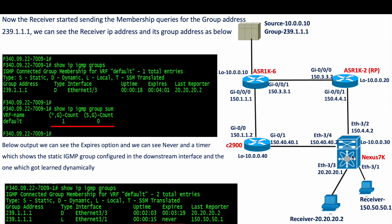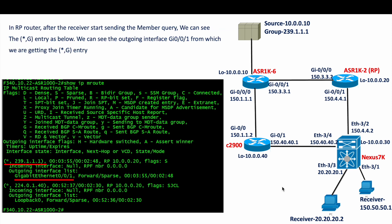We confirmed on the Nexus 7K we receive the (*,G) entry — it does not yet know the source, but it knows the group for which it needs traffic. On the RP router, after receivers start sending membership reports, we can see the (*,G) entry as well. Giving 'show ip mroute' on the RP, we see that the (*,G) for group 239.1.1.1 is arriving on interface GigE 0/0/1, which is connected to the Nexus.